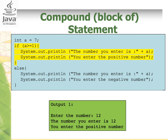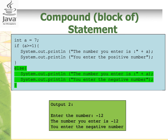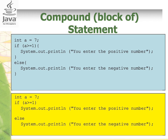If we run the code and enter the value 12, the if statement is true, so the output is 'the number you entered is 12' and 'you entered a positive number.' If we run the code again and enter minus 12, the if statement is false, so it goes straight to the else block and outputs 'the number you entered is minus 12' and 'you entered a negative number.' If we only have one statement in either if or else, braces are optional but valid. Only when we have several statements must we use braces.